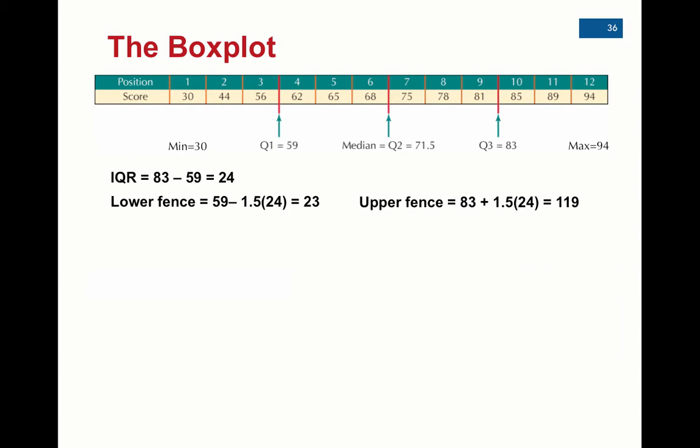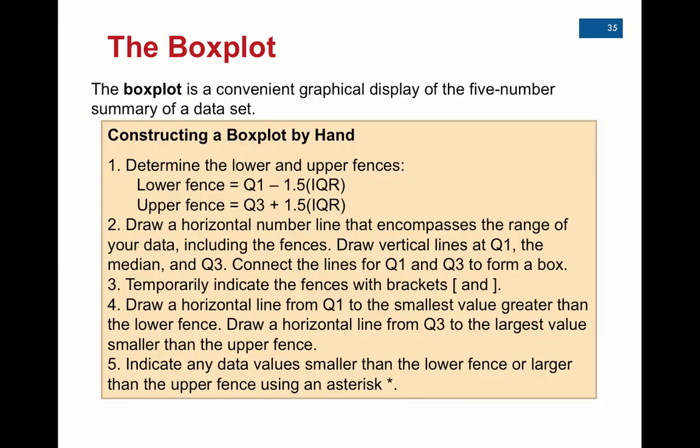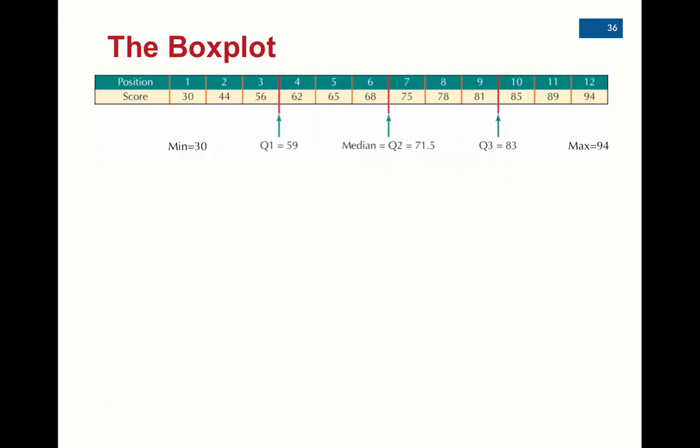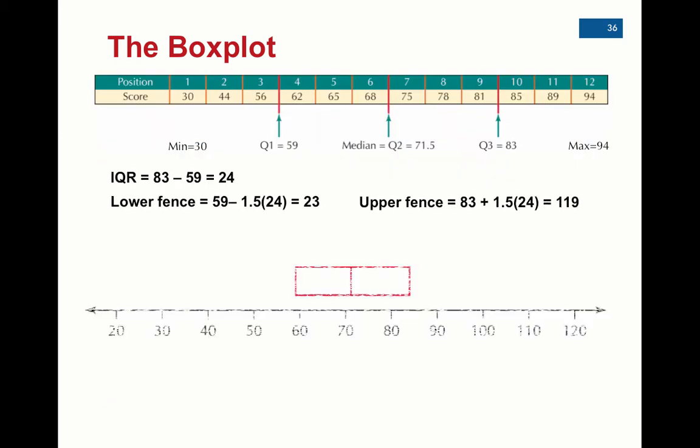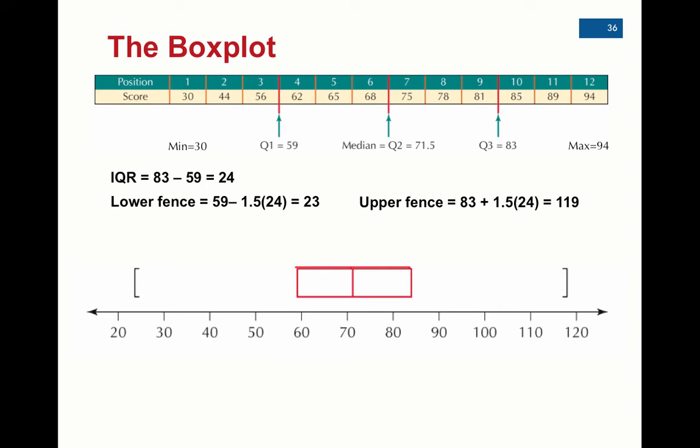Then, going back, after that, you want to temporarily indicate the fences with brackets so that you can say anything beyond this bracket is going to be an outlier. Anything not is not an outlier. So they've done that here with these brackets at the fences.